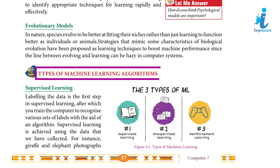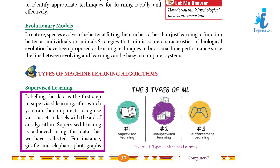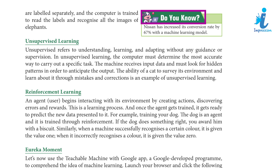Types of Machine Learning Algorithms. Supervised Learning: Labeling the data is the first step in supervised learning, after which you train the computer to recognize various sets of labels. With the aid of an algorithm, supervised learning is achieved using the data that we have collected. For instance, giraffe and elephant photographs are labeled separately, and the computer is trained to read the labels and recognize all the images of elephants.